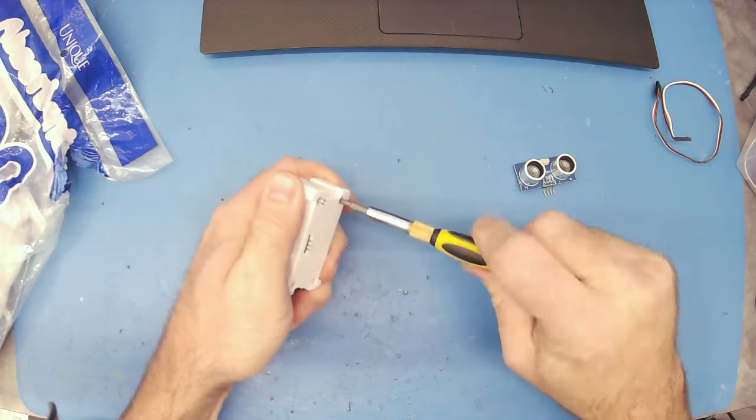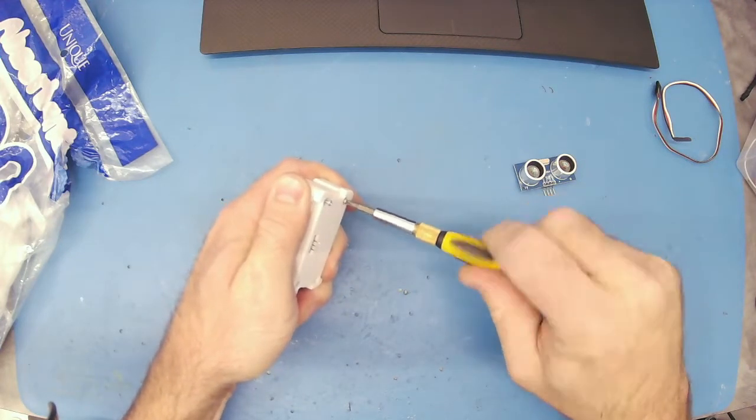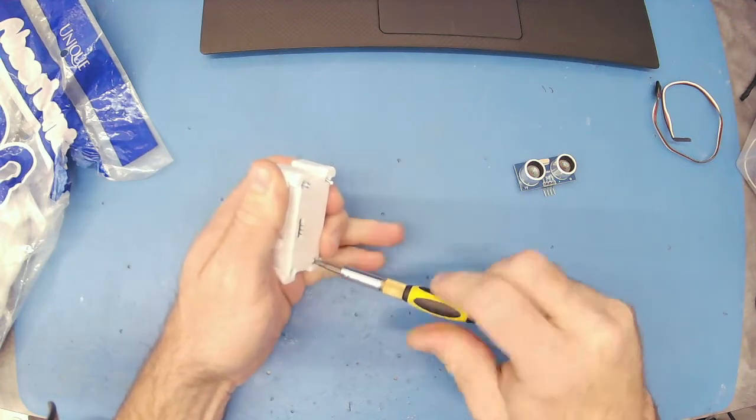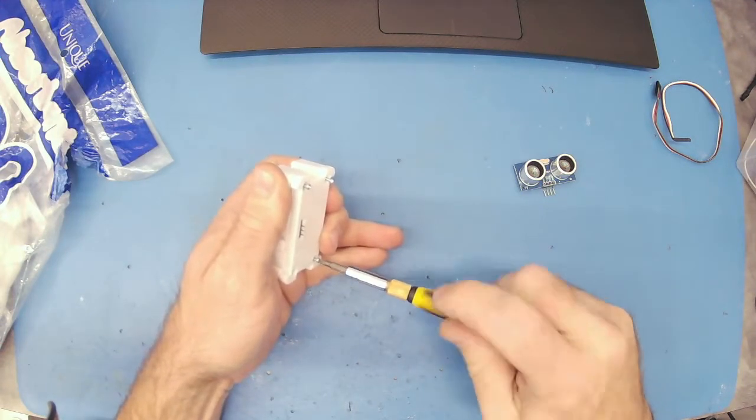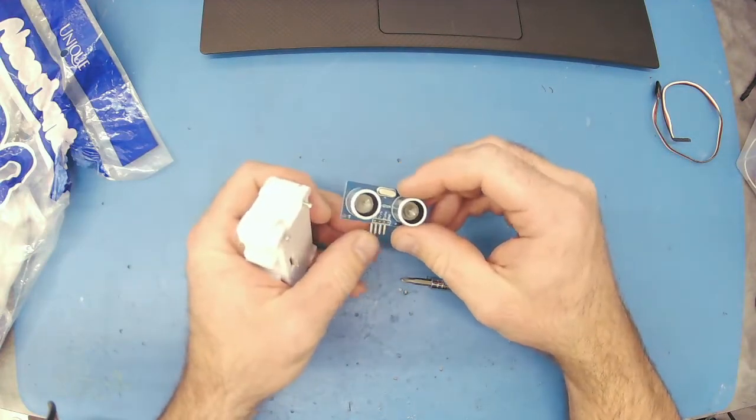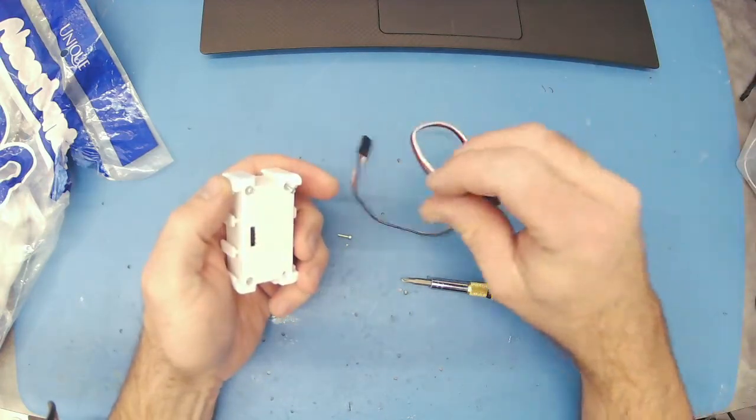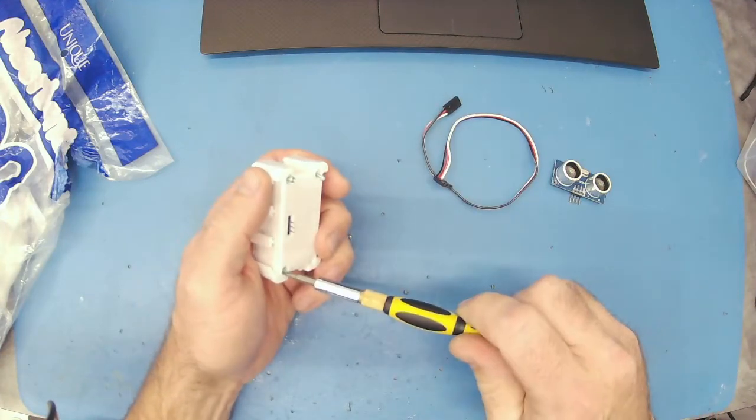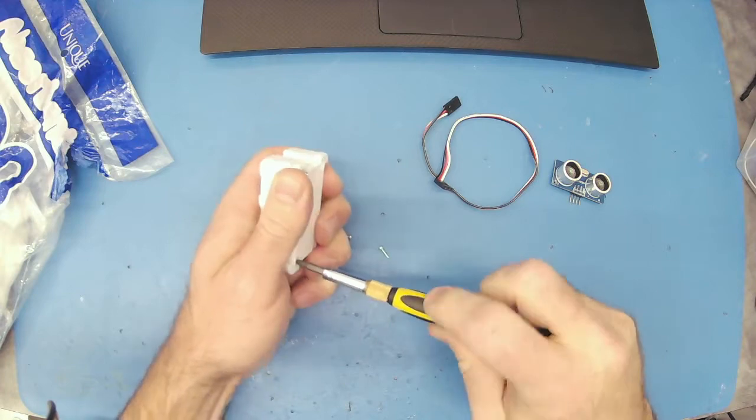This is a really convenient package to work with, especially since generally these distance sensors require you to hook up four wires. Like this one is four wires, you have a trigger and an echo. You'll notice that these ones from EasyRobot only have three wires because the trigger and the echo are on the same pin, so that's super convenient.